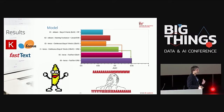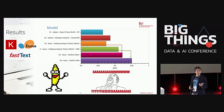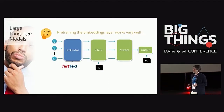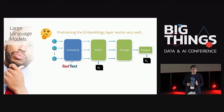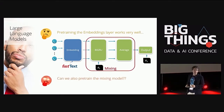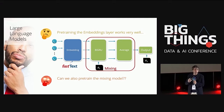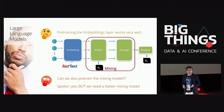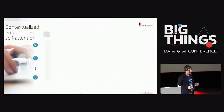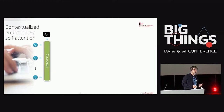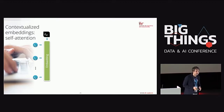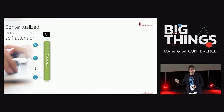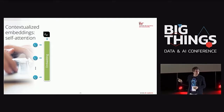The results show two sources of improvement: using embeddings from transfer learning, and using the mixing model. Both contribute. But embeddings were already known three years ago, so what's new? If we can transfer-learn the embedding part, maybe we can also transfer the mixing model, since mixing words in a language-aware way should be a general skill independent of the specific problem.